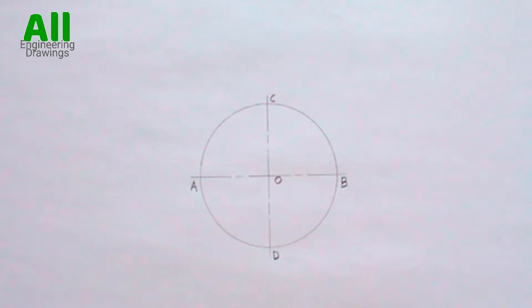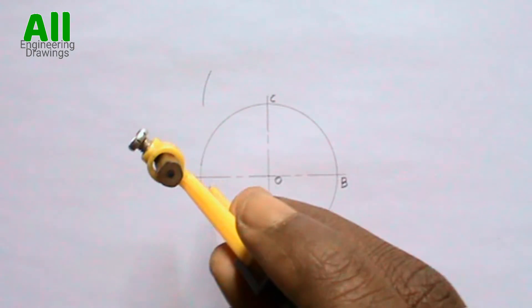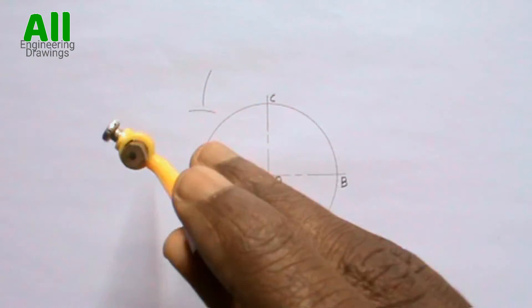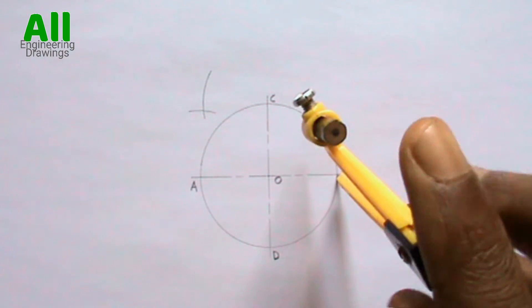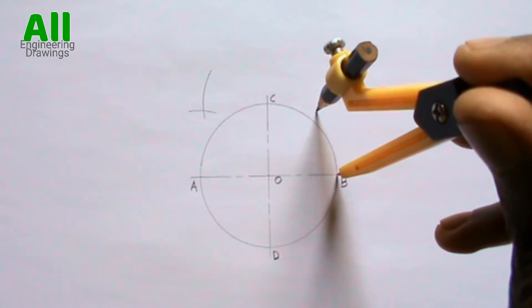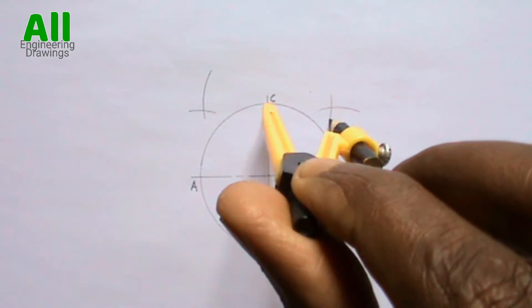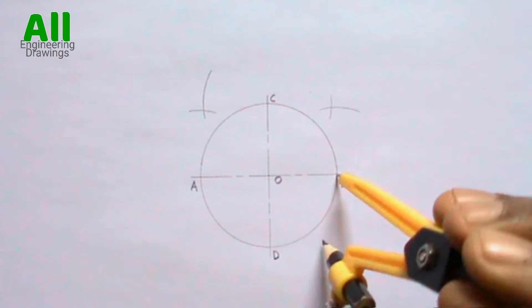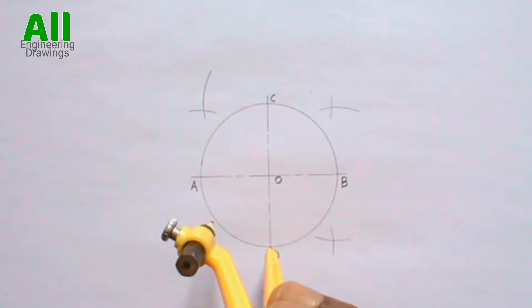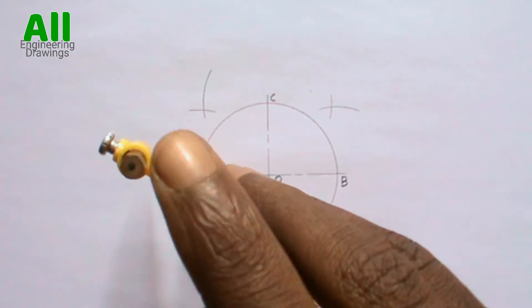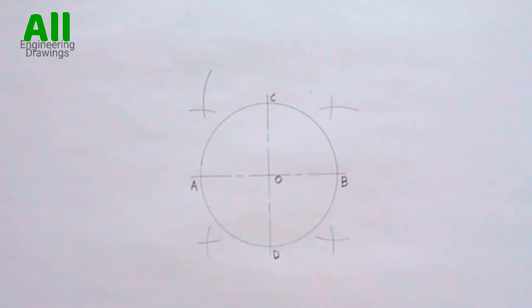Now bisect each of the 90-degree angles. The radius you use to bisect the 90-degree angles can be any convenient radius.